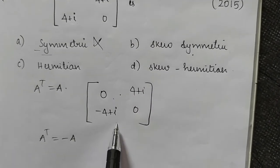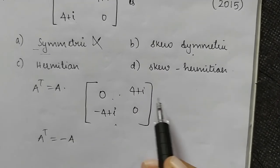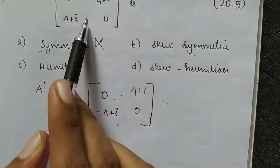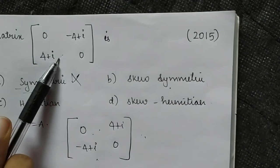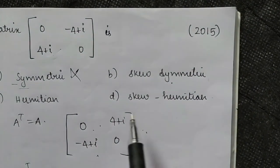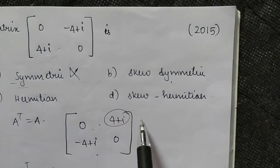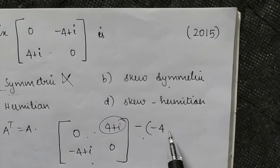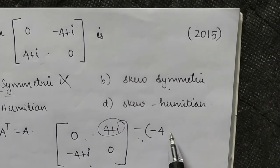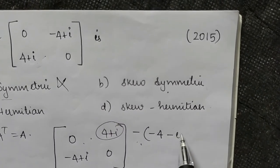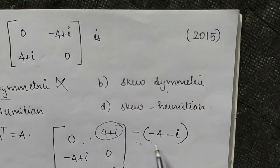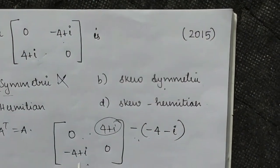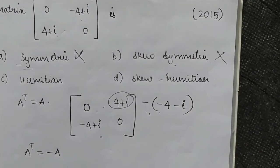For skew-symmetric, A transpose equals minus A. Taking transpose and comparing with the negative: we get minus 4 minus i, which does not match. So we finalize it is not skew-symmetric.